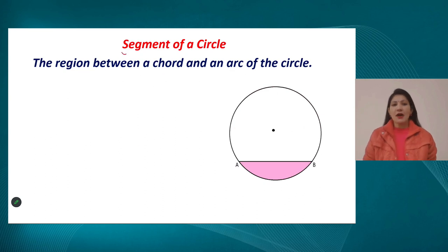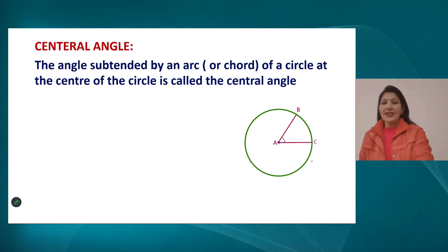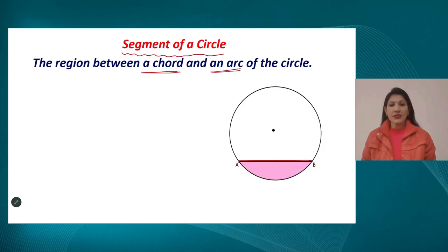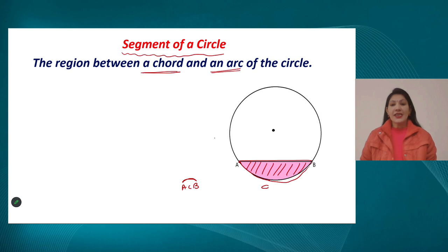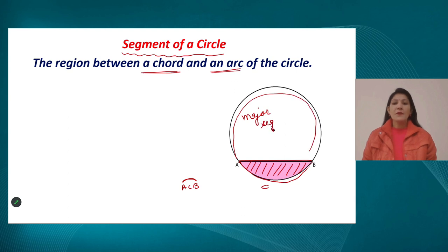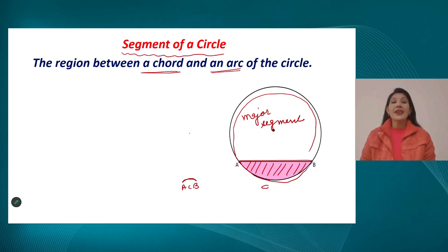After this, we discussed what we mean by the segment of a circle. A segment is the area between a chord and an arc. If we join any two points on the boundary of the circle, the line segment joining these two points is known as the chord. The area shaded between the chord and the minor arc is the minor segment, and the larger area along the major arc is the major segment.